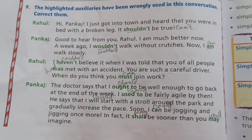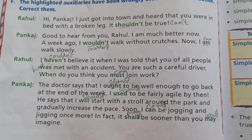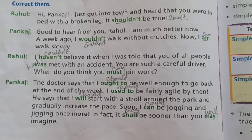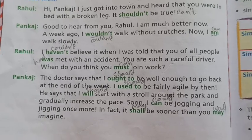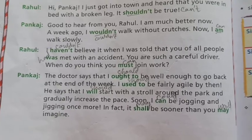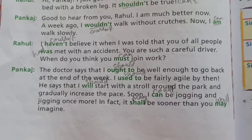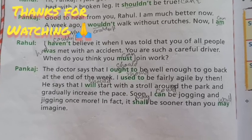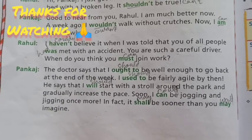Now Exercise F. Here the highlighted auxiliaries are used wrongly, so we have to correct them. In place of shouldn't, write can't. In Pankaj's dialogue, in place of wouldn't, write couldn't, and in place of am, write can. In Rahul's dialogue, in place of haven't, write couldn't, and in place of was, write had. In place of must, write can. Then in the last dialogue of Pankaj, in place of ought to, write should; used to should also be replaced with should; will also should. And can, could, shall, may — in place of may, write would. Thank you.